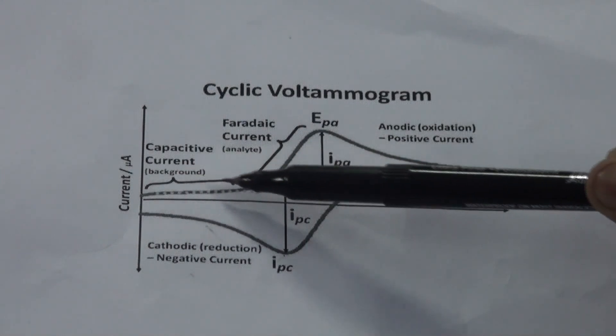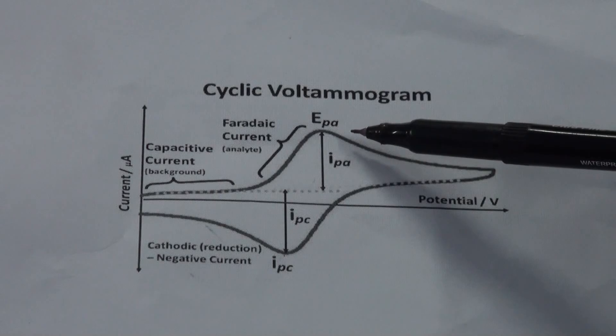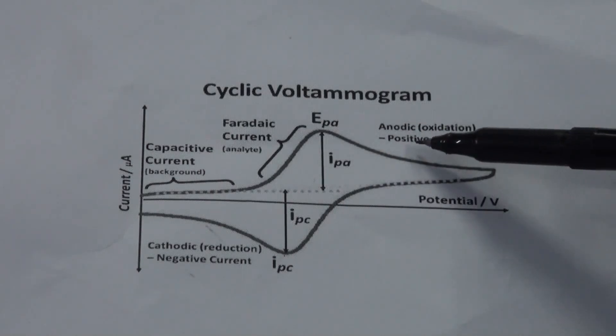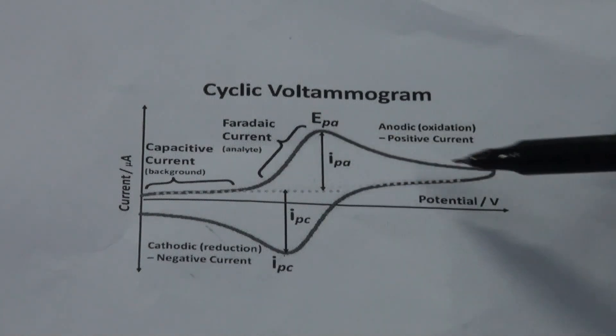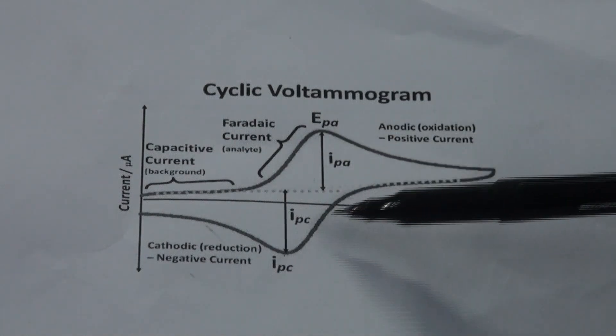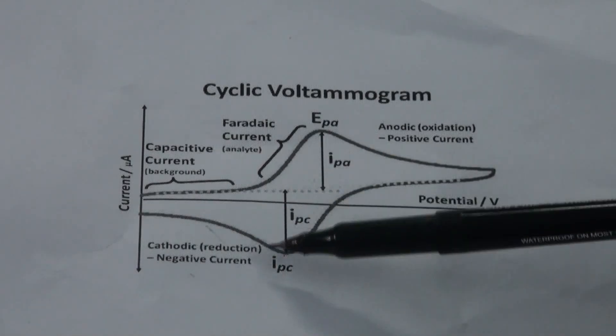As the experiment progresses, we get the peak current values and the peak potential values. As we get the positive current, we get the positive potential and positive current. When we go towards the negative current value, we get the cathodic peak current and the cathodic potential.